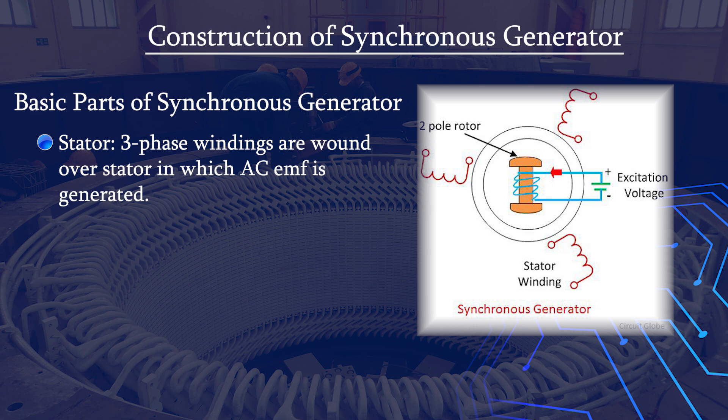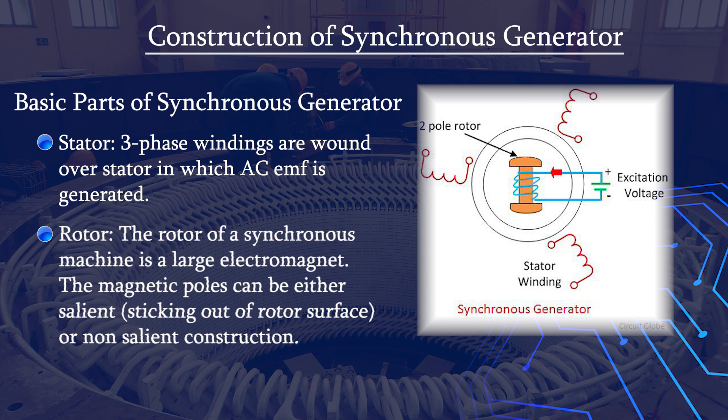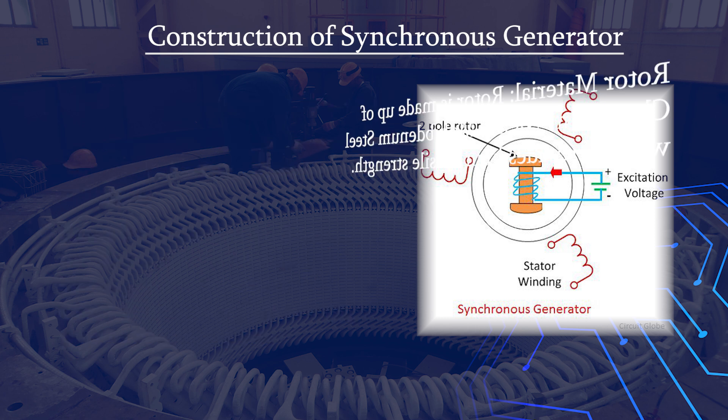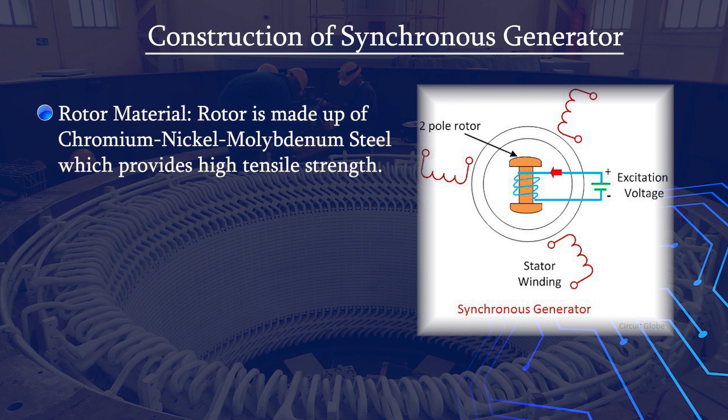The second component is the rotor. The rotor of a synchronous machine is a large electromagnet. The magnetic poles can be either salient, where the poles are projected out of the surface, or non-salient construction. The rotor material is chromium nickel molybdenum steel because it provides high tensile strength.